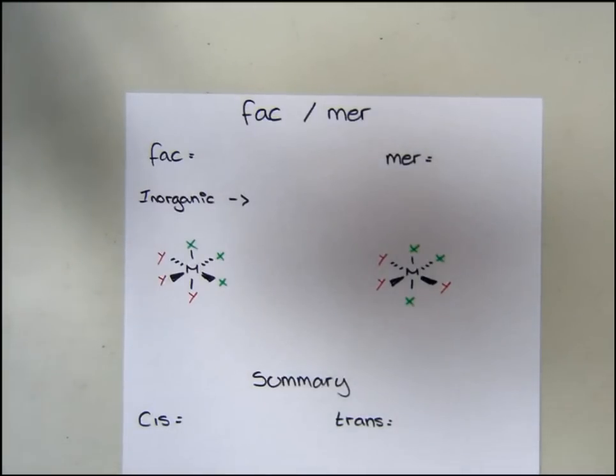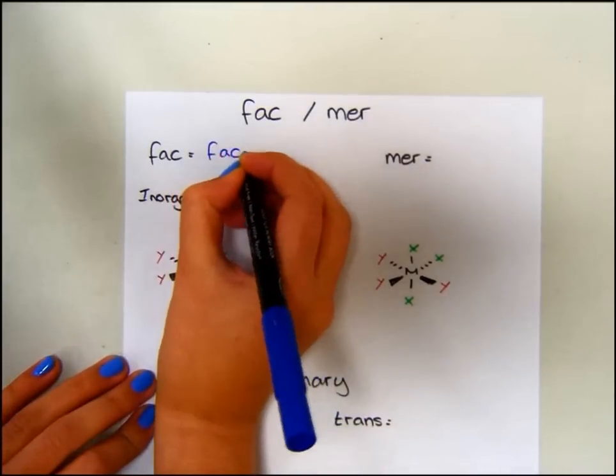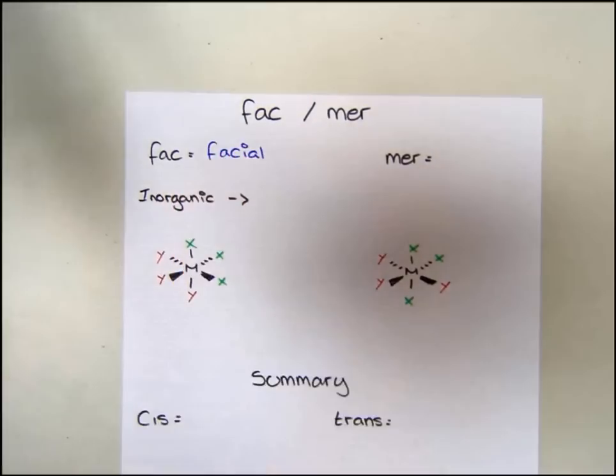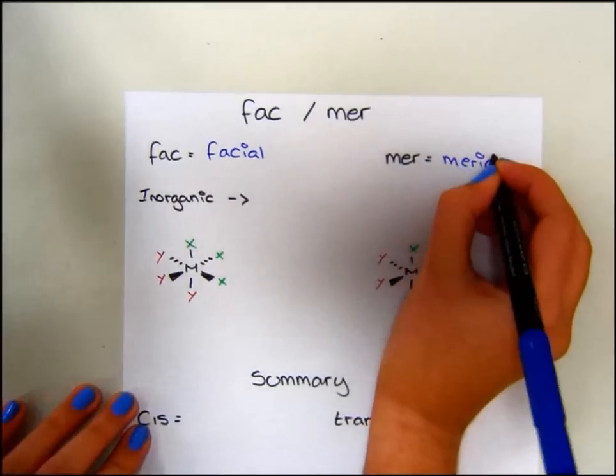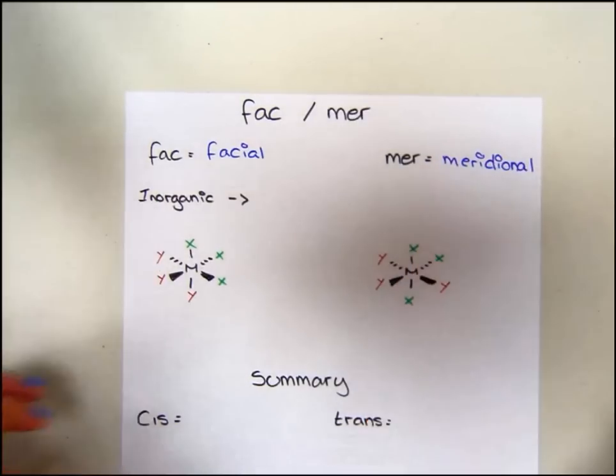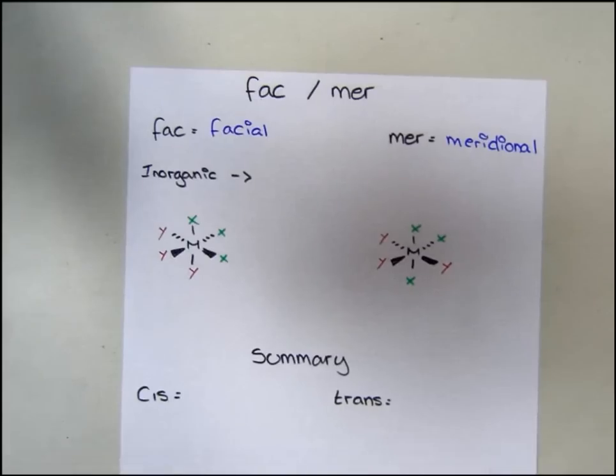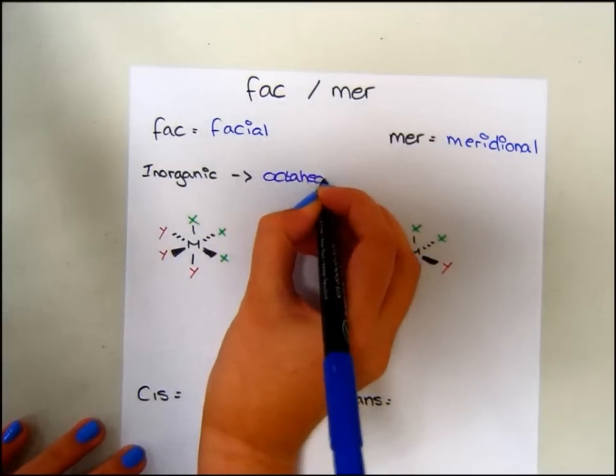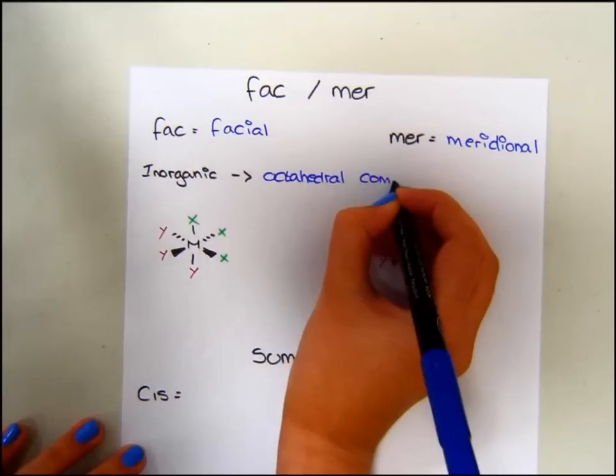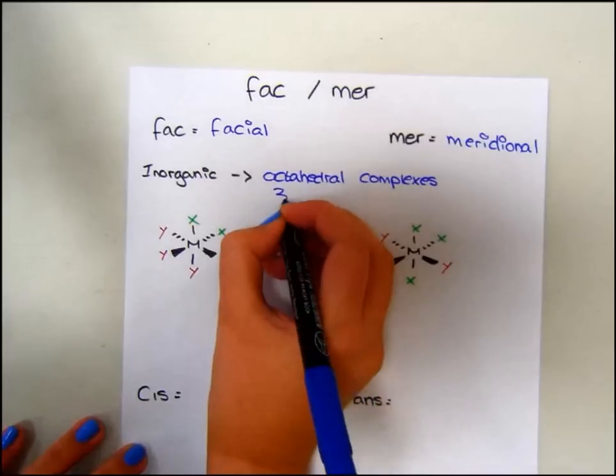Now let's look at fac and mer isomers. In simple terms, fac means facial, and mer equals meridional. Again, this will become clear as we look at an example. Fac and mer is commonly used in inorganic chemistry to describe octahedral complexes that have three substituents.